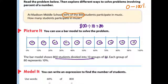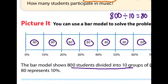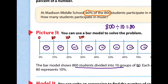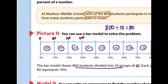Each group of 80 represents 10%. I like to add numbers on top of the bar line: 0% is zero students, 10% is 80 students, 20% is 160, 30% is 240. I like to have those numbers on top because it makes solving problems easier. You can continue — 40%, or four groups of 80, is 320.